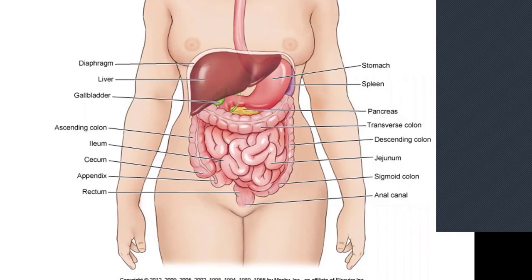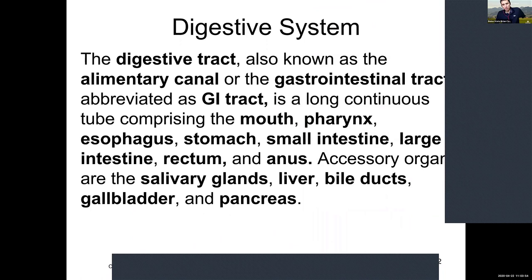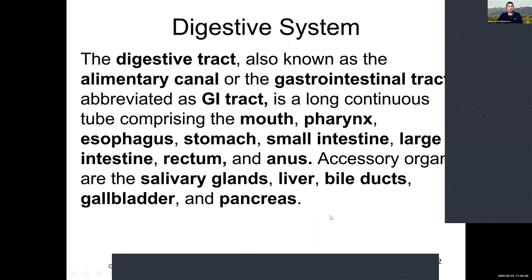Everyone knows what the digestive system does — we put food into our mouth, it travels through the body, and comes out the other end digested. Along the way, the body pulls out the nutrients and calories it needs, and everything that's not used gets compressed and consolidated until it's excreted. We go from the lips, tongue, and teeth all the way to the rectum and anus.